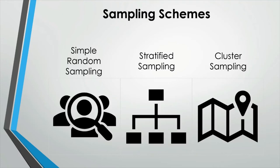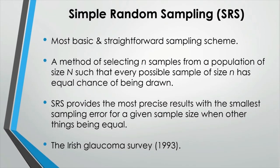We will briefly talk about three major sampling schemes. First, we have simple random sampling, which is the most basic and straightforward sampling scheme. This is a method of selecting n samples from a population of size N such that every possible sample of size n has an equal chance of being drawn. This type of sampling scheme provides the most precise results with the smallest sampling error for a given sample size. One example study that used this sampling scheme is the Irish Glaucoma Survey in 1993, which successfully applied it to measure the prevalence of glaucoma in the older population.